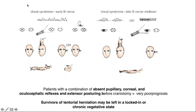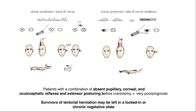To summarize uncal syndrome: early stages may have regular breaths or post-hyperventilation apnea with intact pupils; as the third cranial nerve becomes involved, the patient may develop Cheyne-Stokes respiration; with midbrain involvement, hyperventilation develops; full ipsilateral third nerve palsy may occur; negative doll's eye and Kernohan phenomenon — ipsilateral weakness — may appear.